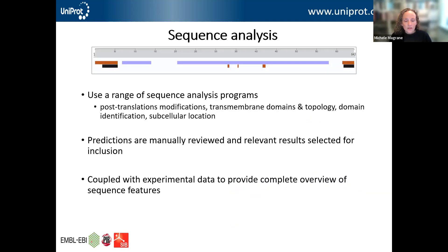We use a range of sequence analysis programs to predict various regions and sites of importance within the protein sequence — things like post-translational modifications, transmembrane regions, and identification of important domains. All of the predictions are manually reviewed and only relevant results which make biological sense are selected for inclusion. These predictions are coupled with experimental data extracted from the literature to provide a complete overview of the important features of a particular protein sequence.